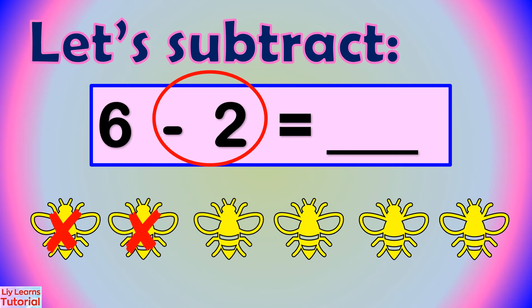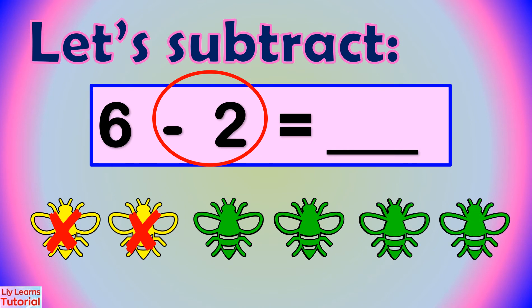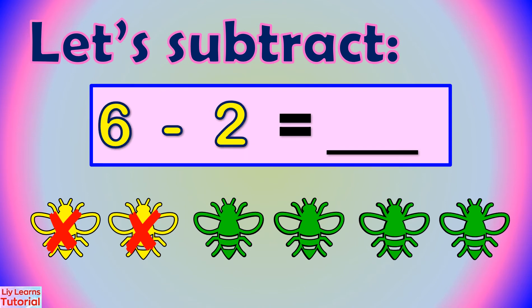1, 2. Now let's count how many flies are left. 1, 2, 3, 4. 4 flies. Therefore, 6 minus 2 equals 4.